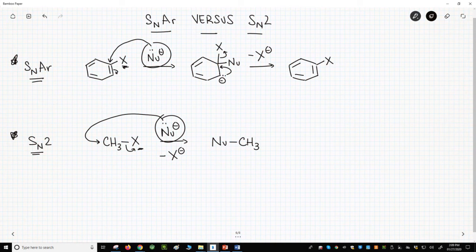The SN2 on the bottom is one step. There are no reaction intermediates. All bond breaking and forming occur at the same time.